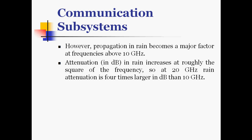However, propagation in rain becomes a major factor at frequencies above 10 GHz. Rain attenuation increases at roughly the square of the frequency, so at 20 GHz, rain attenuation is 4 times larger in dB than at 10 GHz. This concludes the discussion of communication subsystems. We have now covered four types of subsystems, and the remaining satellite antenna subsystems will be covered in the next lecture.